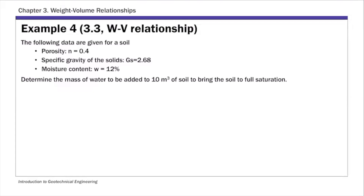This is example number four. You are given porosity, specific gravity, and moisture content, and this time you are asked to determine the mass of water to be added to 10 cubic meters of soil to bring the soil to full saturation. The soil is originally unsaturated with moisture, and we're going to add water to bring it to full saturation.